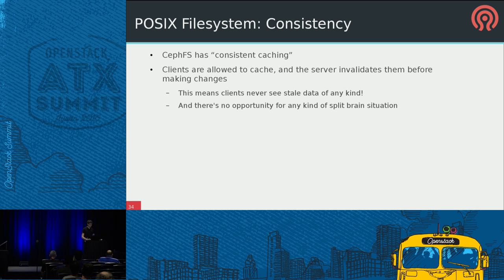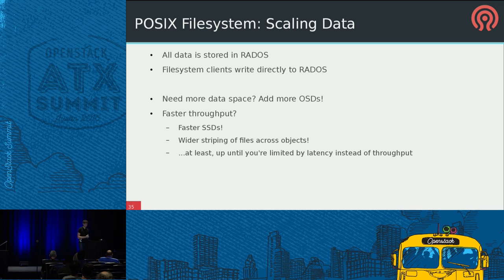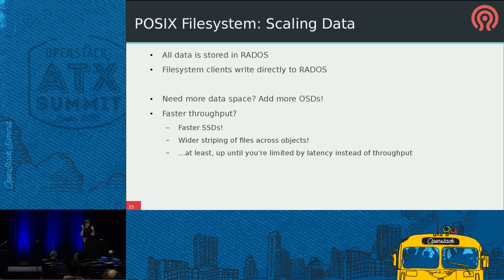Scaling the data path — the file I/O path — within CephFS is pretty trivial. All data is stored in RADOS and file system clients write directly to RADOS; you scale it the same way as an ordinary RADOS cluster. If you want more throughput you can put in faster SSDs, or tune chunk sizes — for example using 64MB chunks for 10GB files instead of 4MB chunks — until you're limited by latency instead of throughput, at which point making the OSDs faster is being worked on.